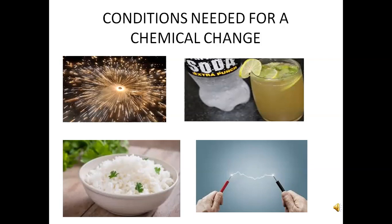Fourth condition: electric current is also a condition needed for a chemical change — for example, vanaspati is obtained from vegetable oil by addition of hydrogen to the oil. To summarize, the four conditions needed for a chemical change are: (1) change in pressure, (2) substances made to physically contact each other, (3) heating, and (4) electric current.